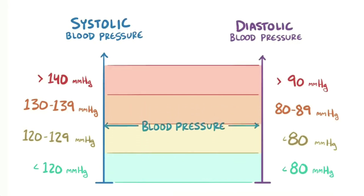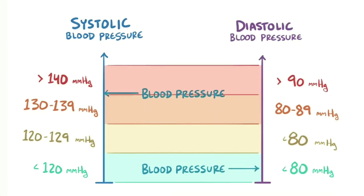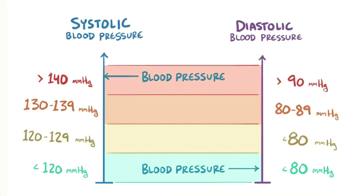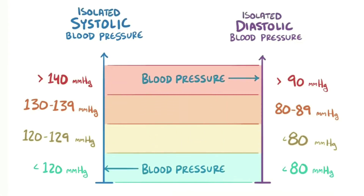Typically both systolic and diastolic pressures tend to climb or fall together, but that's not always the case. Sometimes you can have elevated readings in only one number — this is referred to as isolated systolic hypertension or isolated diastolic hypertension.